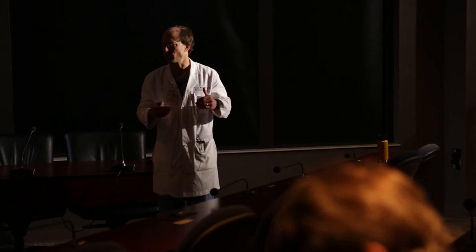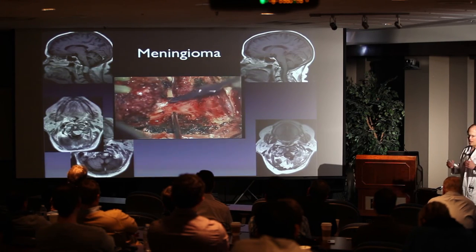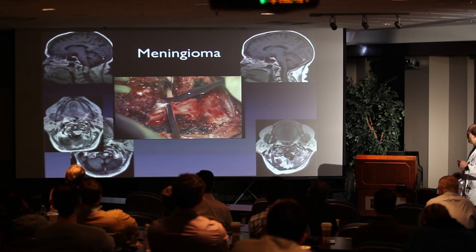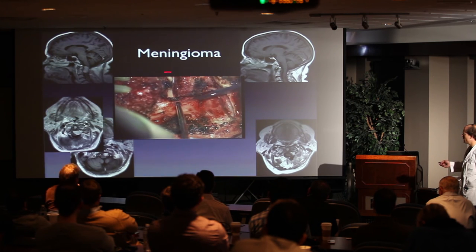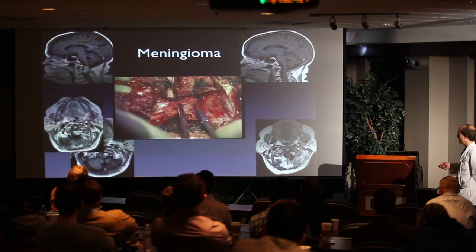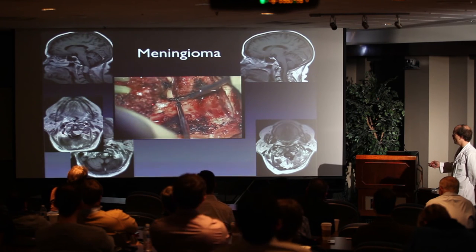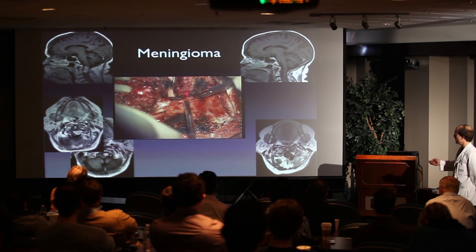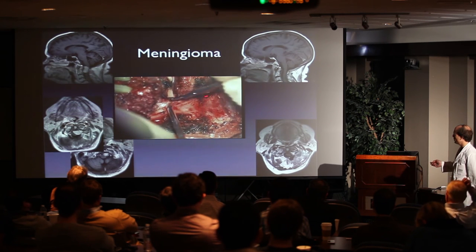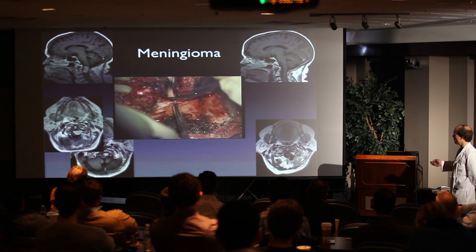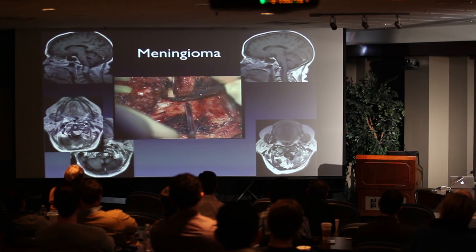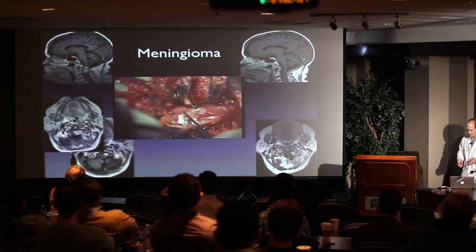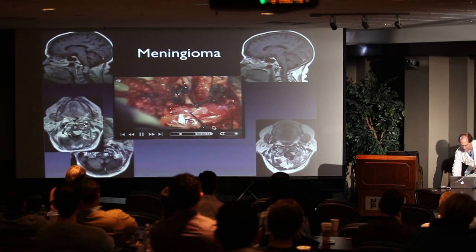Moving on to pathology — everybody teaches the approaches but you really need to know when to apply it. Meningioma is probably the most common tumor we use the far lateral approach for. This is a lady with a classic foramen magnum meningioma — very typical far lateral retrocondylar variation. You can see the dura opened right behind the vertebral artery as it enters the dura. The dural opening is very straightforward and linear, and then the tumor is exposed.